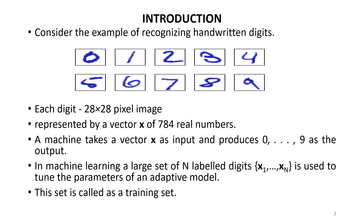Pattern recognition is automated recognition of patterns. Consider the example of recognizing handwritten digits. Here every digit is a 28 by 28 pixel image, so it can be represented by a vector x of 784 real numbers. 28 times 28 is 784. A pattern recognition machine takes a vector x as the input and produces 0 to 9 as the output.